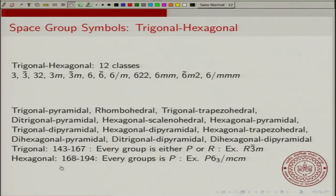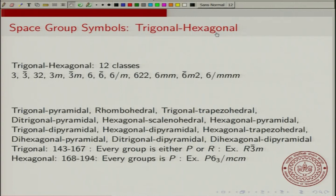For the hexagonal system, every group has to be primitive. An example is P6₃/MCM. The trigonal, hexagonal, and tetragonal crystal systems have a fairly large number of space groups.